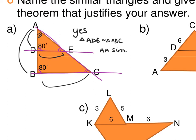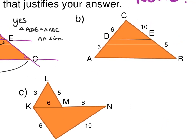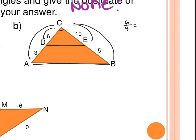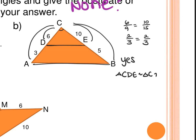Example 3b: angle C is reflexive (congruent in both triangles). No third side info to use SSS, no second angle for AA. But we have side information: 6/9 = 10/15 — both equal 2/3. With one congruent included angle and two proportional sides, this is yes — triangle CDE is similar to triangle CAB by SAS similarity.